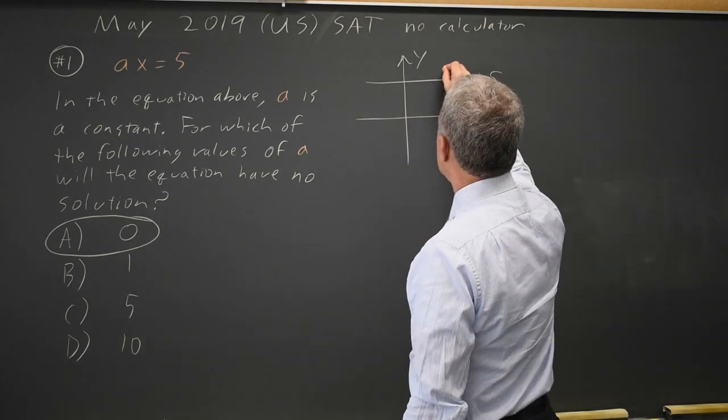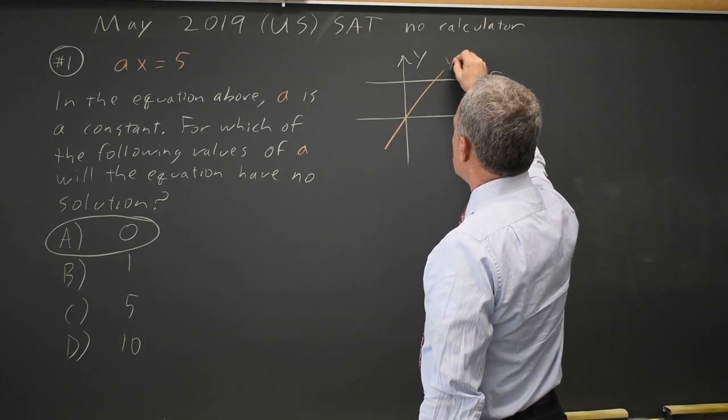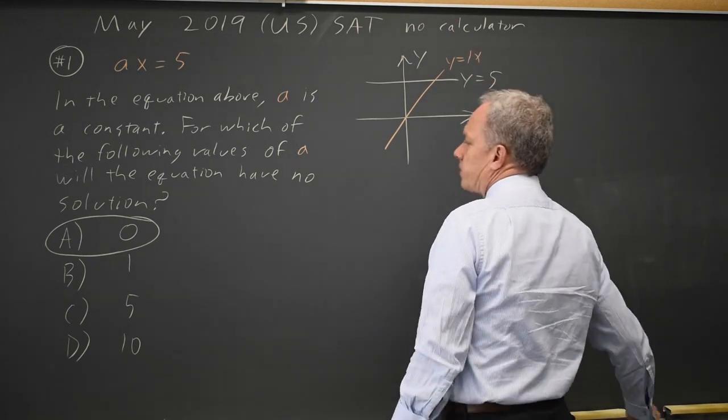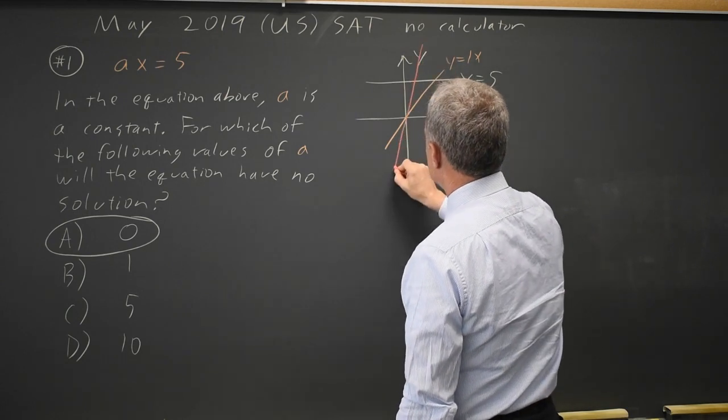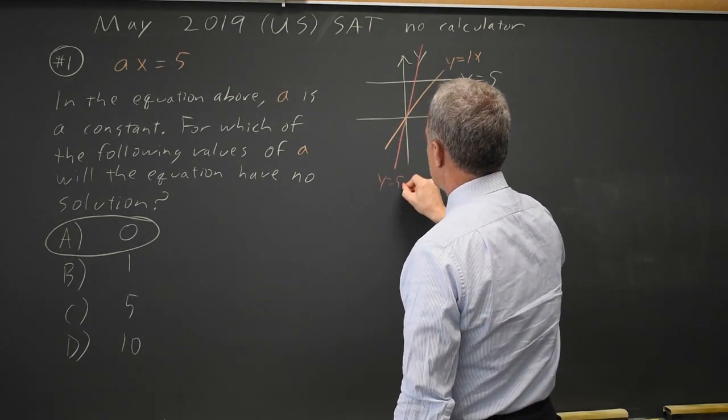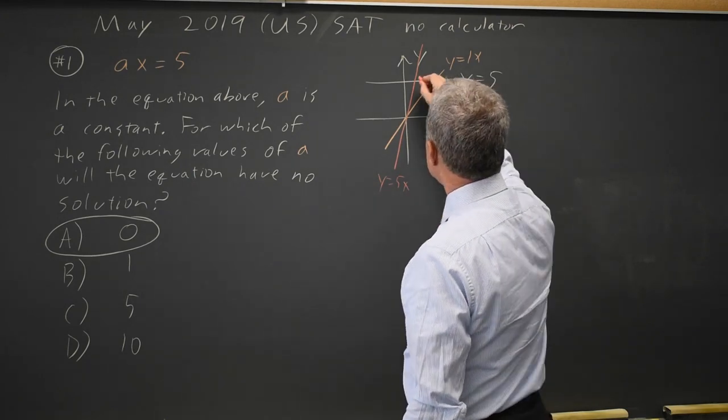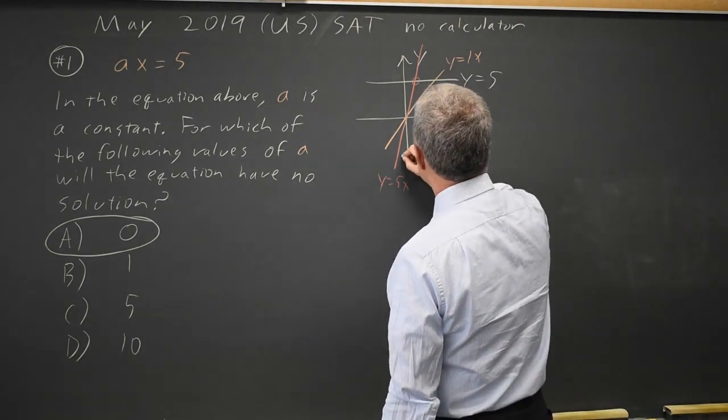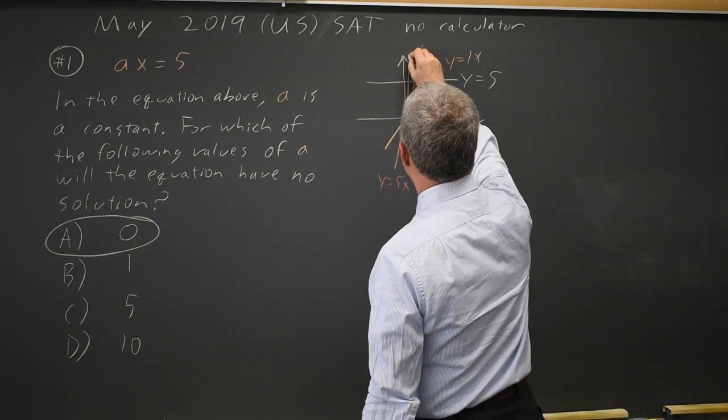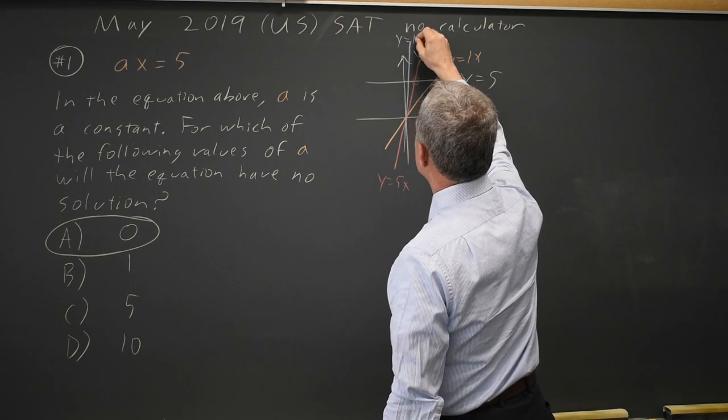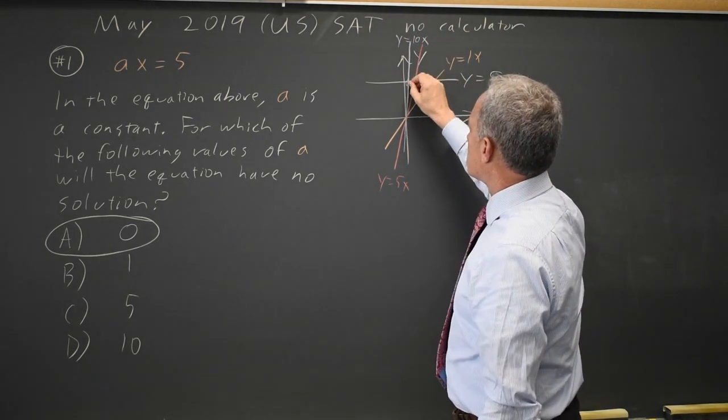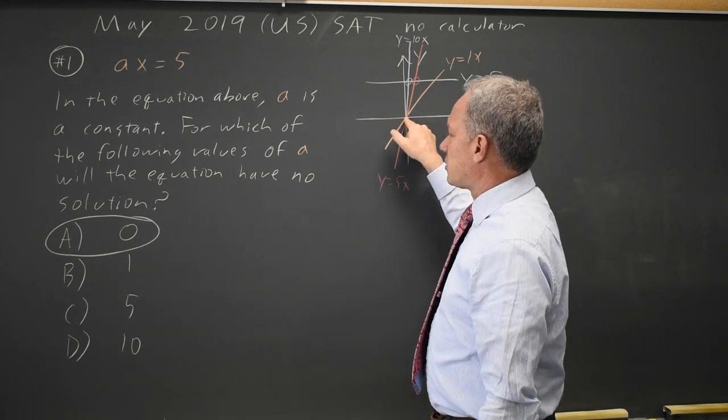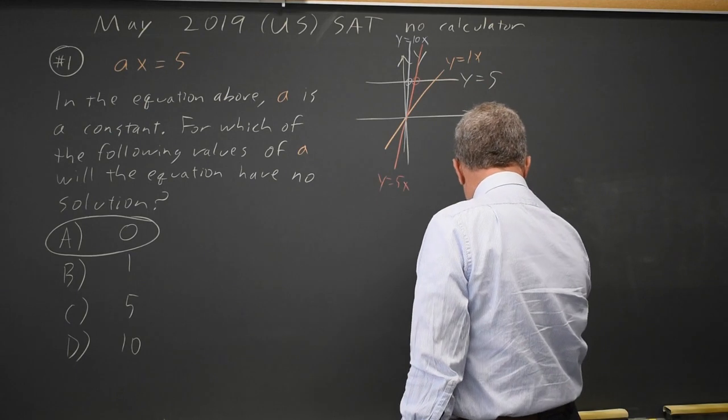Y equals 1x will intersect y equals 5. Y equals 5x also intersects y equals 5. The only way to avoid intersecting y equals 5 is to have a slope of 0, which is y equals 0x.